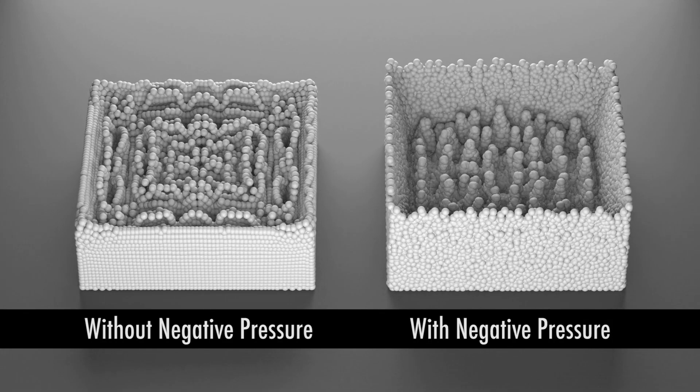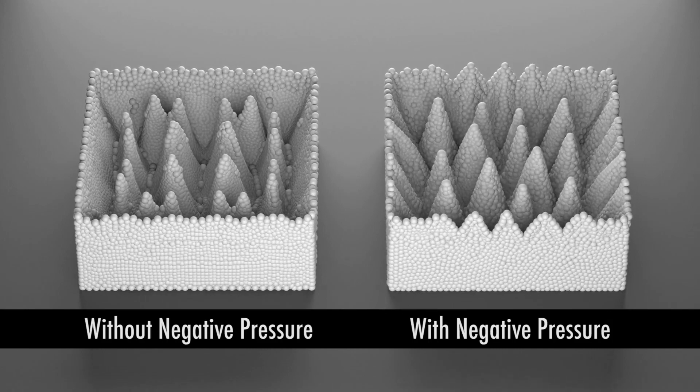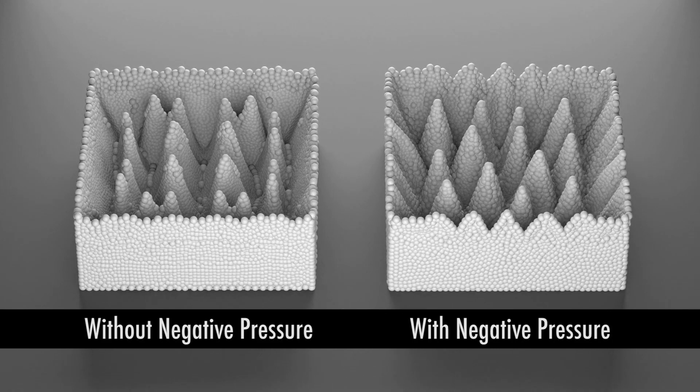Some SPH solvers clamp the negative pressure in pure fluid simulations, which is not sufficient for the accurate simulation of ferrofluids. The negative pressure is necessary to keep an intact fluid surface.